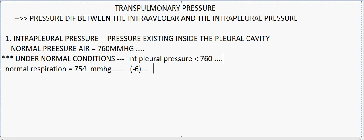So generally, the intra-pleural pressure is always negative. This is an important fact to remember. The main reason for this negative intra-pleural pressure is the pumping of the intra-pleural fluid inside the pleural cavity.